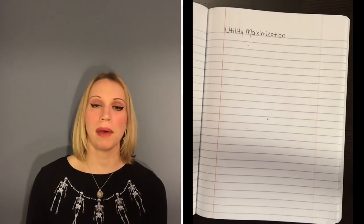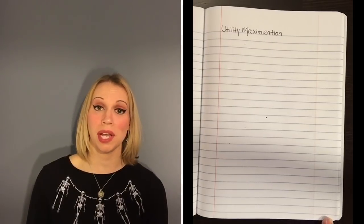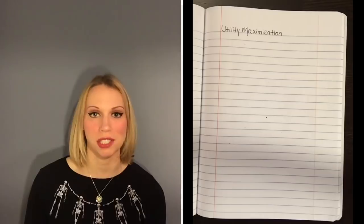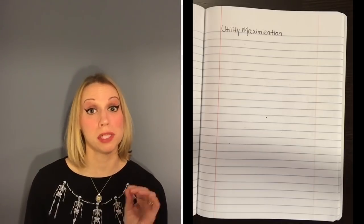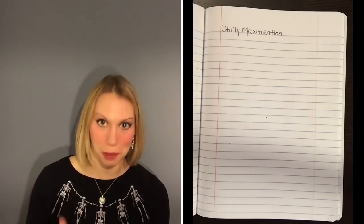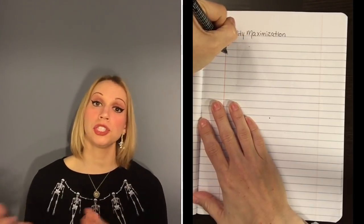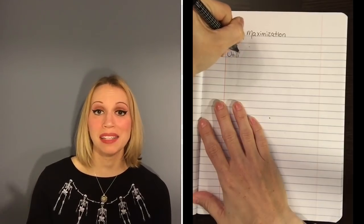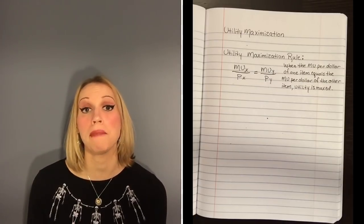Now in our example, we really didn't talk about how much money you were spending. In reality, money is a scarce resource, and so a lot of times we have to make choices with budget constraints. So let's talk about how you can maximize your utility even when you're on a budget. The trick is trying to get the most bang for your buck — trying to get the most utils per dollar. You know that you've maximized your utility whenever the marginal utility per dollar of one item equals the marginal utility per dollar of another item. That's your utility maximization rule.